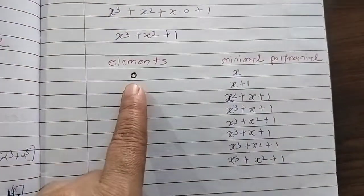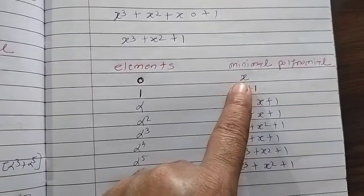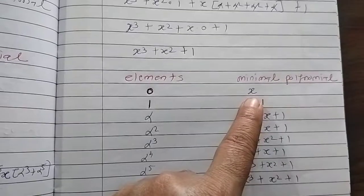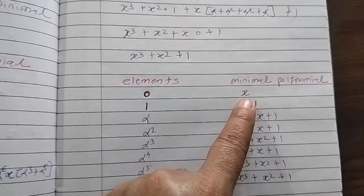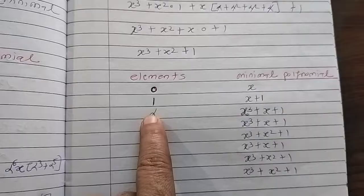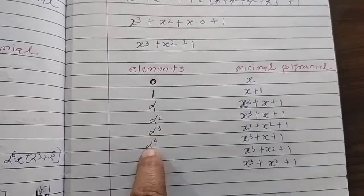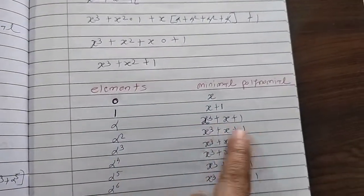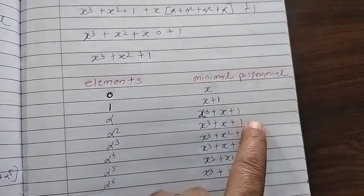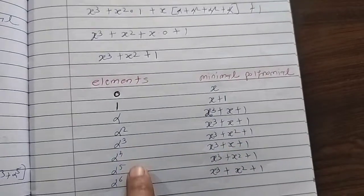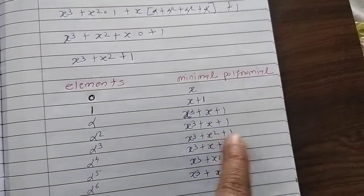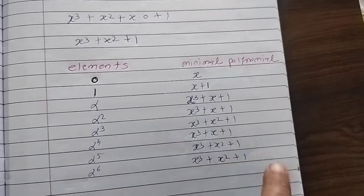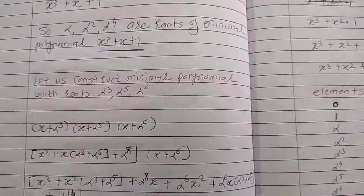To summarize: for GF(8), the minimal polynomials are: x+0 = x for root 0; x+1 for root 1; x³+x+1 for roots α, α², α⁴; and x³+x²+1 for roots α³, α⁵, α⁶.